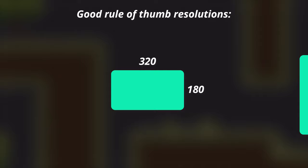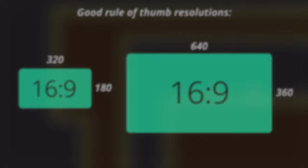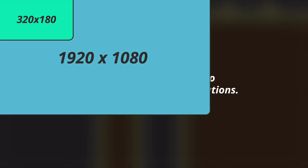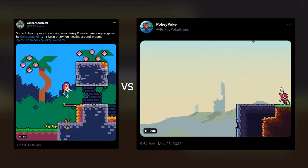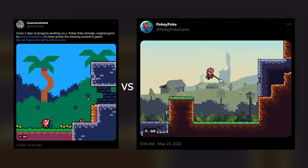If you're making a pixel art game, a really good rule of thumb resolution is 320x180 or 640x360. They have an aspect ratio of 16:9, which is very common across monitors, TVs, and phones. These two small resolutions also perfectly scale up to all of the most common 16:9 HD resolutions like 1080p, 2K, and 4K in whole multiples, which means you don't get any weird pixel stretching. You want to scale your game in whole integers like this whenever possible.